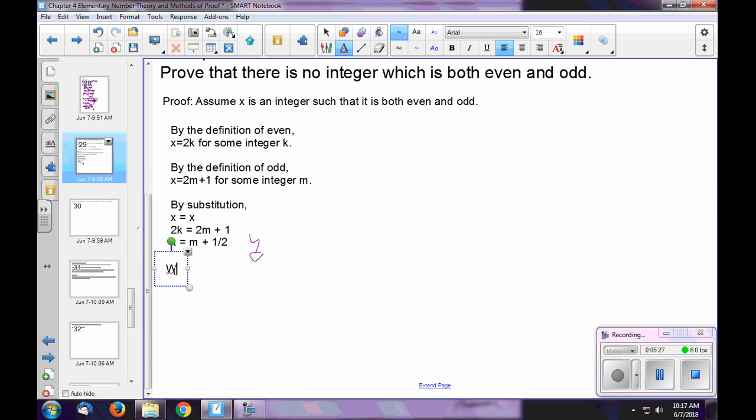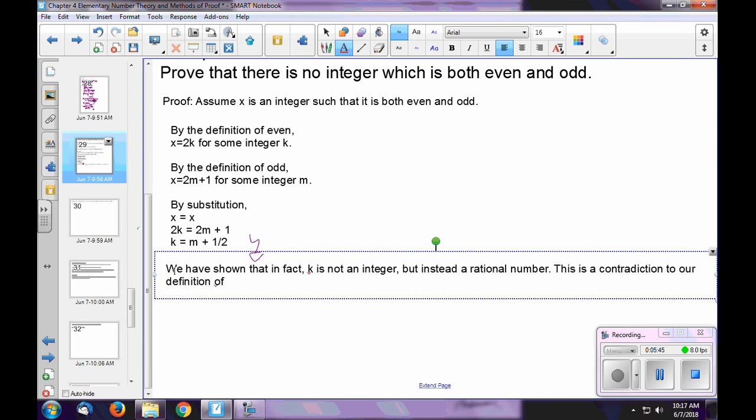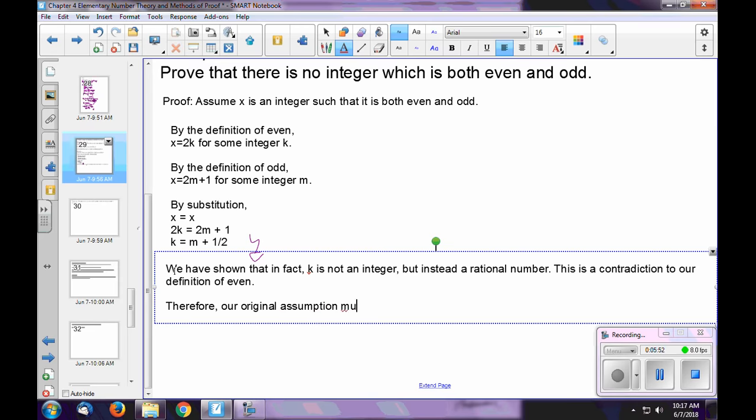So what have we stated? We have shown that in fact, k is not an integer, but instead a rational number. This is a contradiction to our definition of even. Therefore, our original assumption must have been false. Thus, there is no integer that is both even and odd.